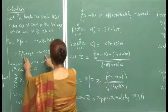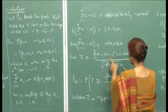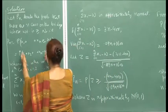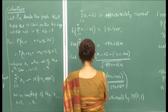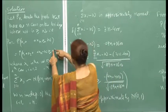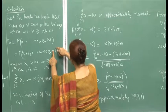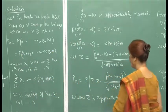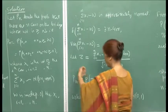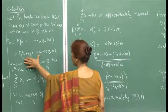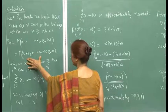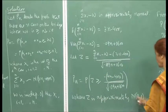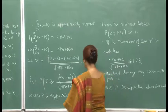When I standardize, the probability can be written as P(Z ≥ [-(3n - 400)] / standard deviation), where Z is the standard normal variate. This is obtained by subtracting the mean and dividing by the standard deviation. Z is approximately standard normal, and now we want this probability to be greater than or equal to 0.1.